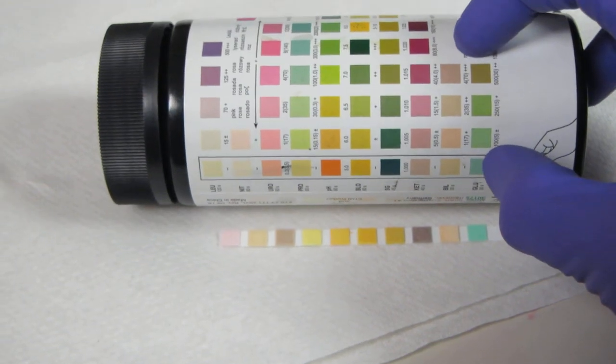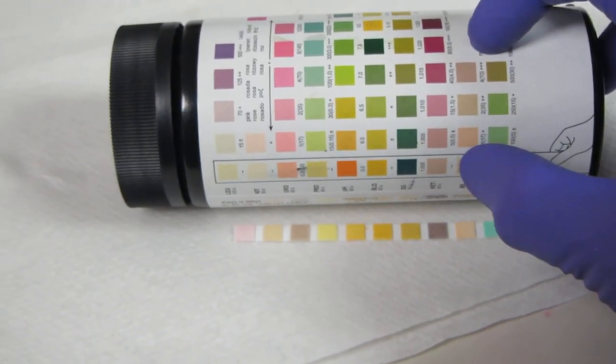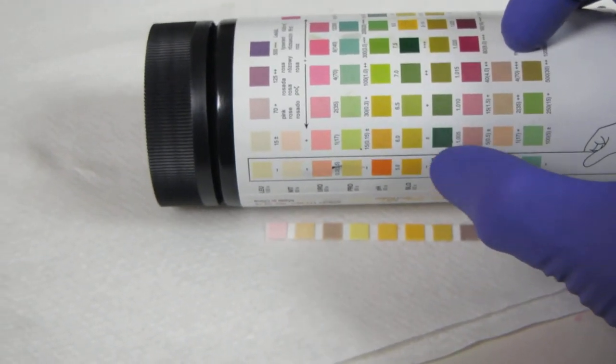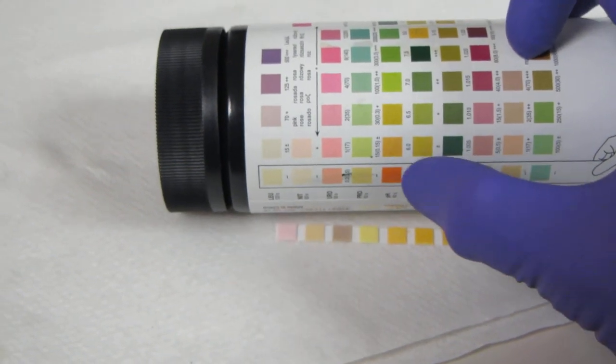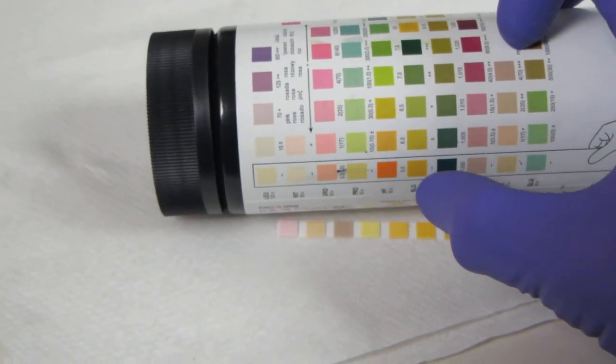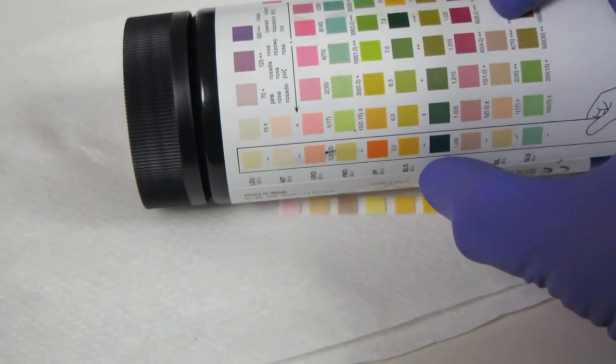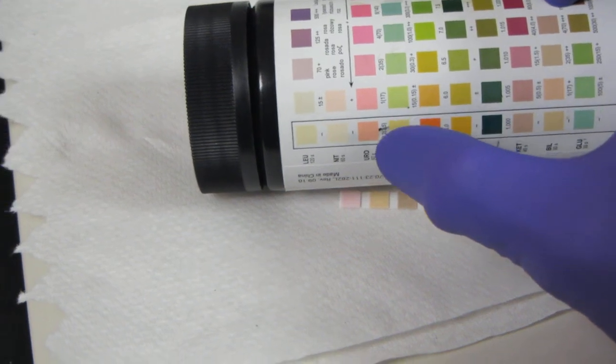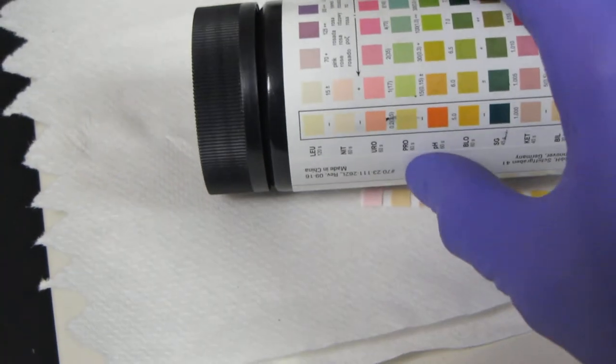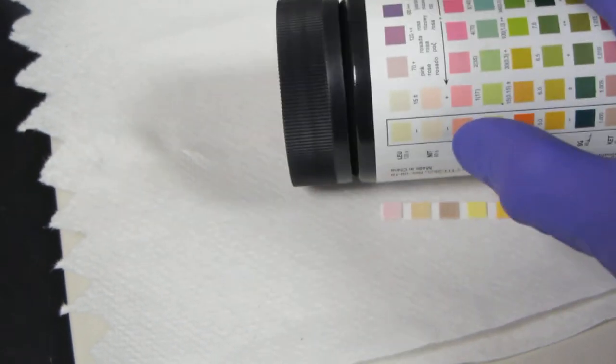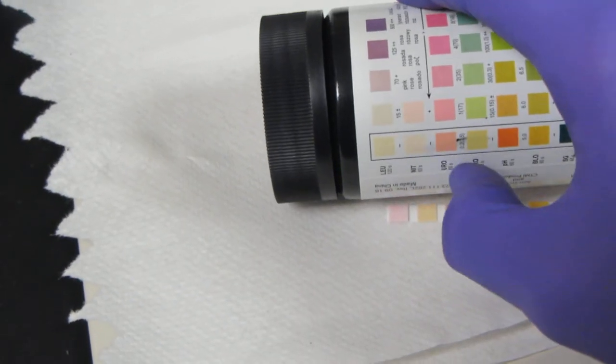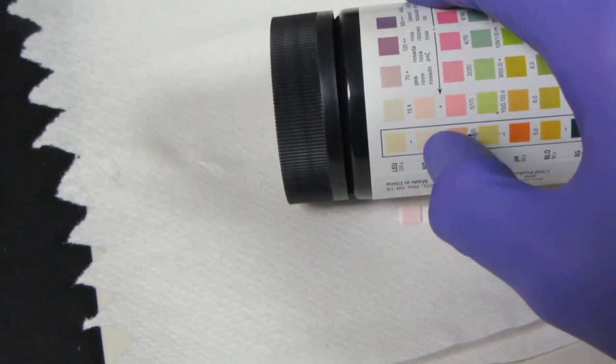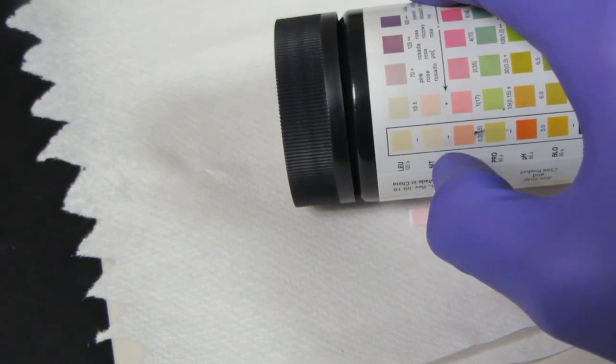So in one fell swoop, I'm going to check for sugar, bilirubin, ketones. I'm going to check specific gravity of the urine. I'm going to check for if there's blood present. I'm going to check for pH. I'm going to check for protein. I'm going to check for something called urobilinogen, which is a breakdown product from the liver. I'm going to check for nitrates, and I'm going to look for leukocytes.